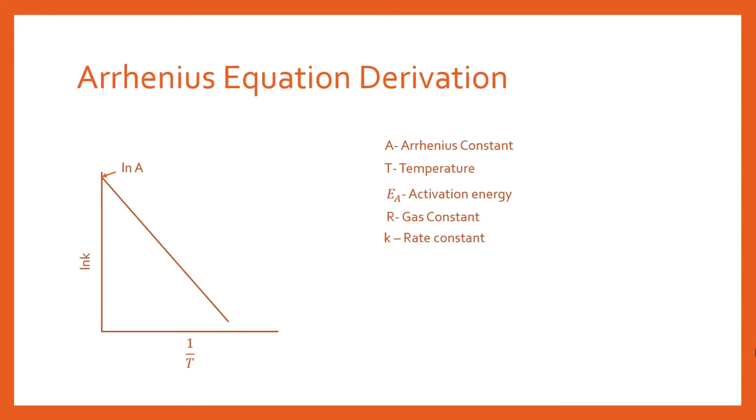You're basically extrapolating backwards to an infinite temperature because the origin of this graph at zero will be one over T. To make this become zero, you're going to have to have an infinite temperature for the inverse temperature to end up being zero.